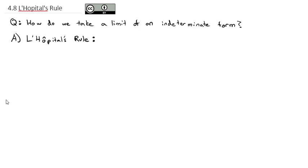L'Hôpital was a French mathematician who published this idea in a French calculus text. However, he's probably not the one who came up with it — it was probably one of the Bernoulli mathematicians. The Bernoullis were a Swiss family that were some of the most amazing mathematicians ever, all from the same family. There's evidence that one of the Bernoullis first came up with this rule, while L'Hôpital was the first to publish it.